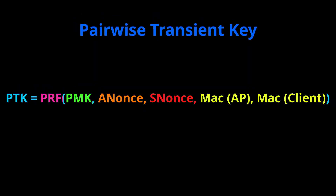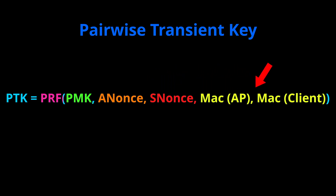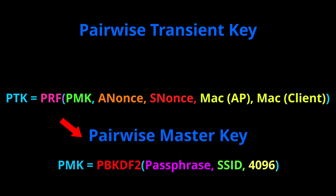Now let's come back to PTK. It's calculated using a cryptographic function called PRF, and it takes the PMK, ANonce, SNonce, and both MAC addresses. The PMK here stands for Pairwise Master Key and is calculated using another cryptographic function, which takes the passphrase, the SSID, and the number of iterations for the algorithm.